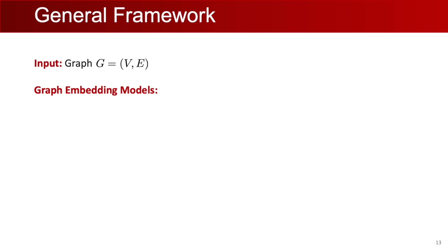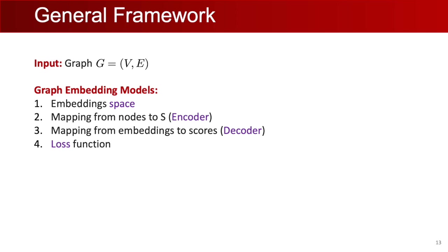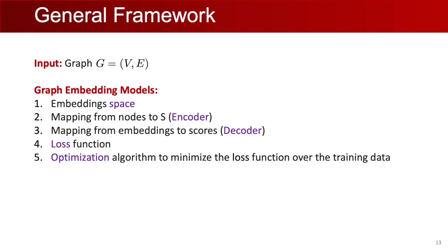The general framework to compute graph representations takes as input a graph with vertices and edges and defines the following components. First, it picks an embedding space — here, the hyperbolic embedding space. It then defines an encoder mapping nodes to the embedding space, a decoder mapping embeddings to scores by computing similarities between embedding pairs. In Euclidean space this is done with dot products, but we'll generalize to hyperbolic embeddings. It computes a loss function encouraging similar nodes to have high embedding similarity and dissimilar nodes to have lower similarity. Finally, an optimization algorithm learns the embeddings by gradient descent and loss minimization.